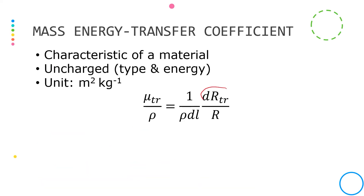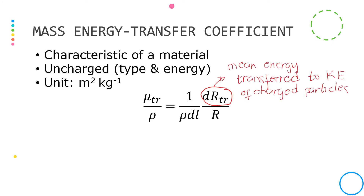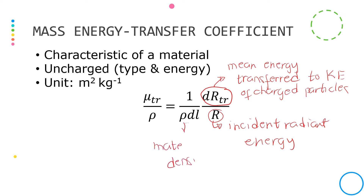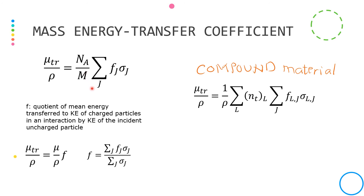The mass-energy transfer coefficient of a material for uncharged particles of a given type and energy is the quotient of dR_tr over R divided by ρ·dL, where dR_tr is the mean energy transferred to kinetic energy of charged particles due to interaction of uncharged particles of incident radiant energy R traversing a distance dL of material with density ρ. We can also express the mass-energy transfer coefficient in terms of individual cross-sections with an f-factor, and we have the relationship between the mass-energy transfer coefficient and the mass attenuation coefficient. It can also be expressed for a compound material.